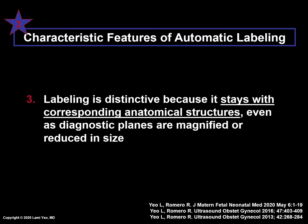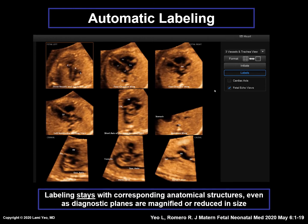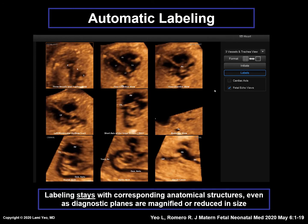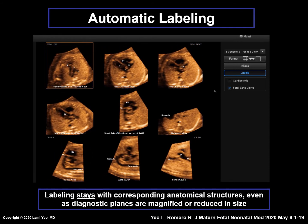The third characteristic feature of automatic labeling is that it stays with the corresponding anatomical structures even as the diagnostic planes are magnified or reduced in size. This is because labeling is essentially married to the anatomical structures. Please notice how the labeling always stays with the structures in this video clip.